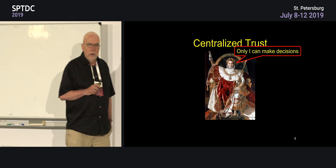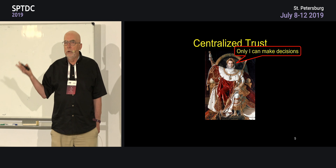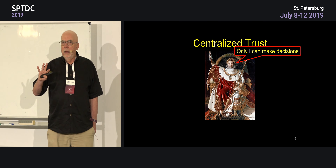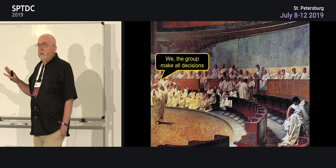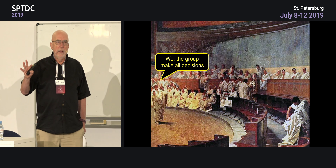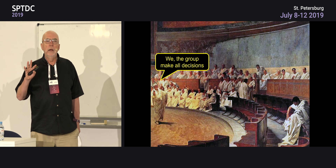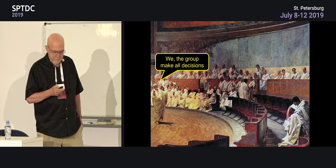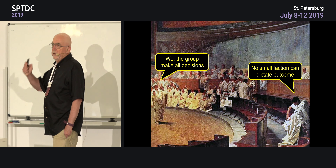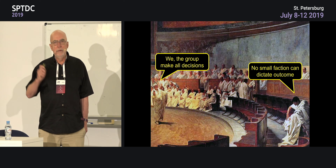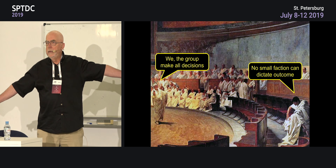In a centralized trust system, there is one party who makes at least one important decision. The problem is that party might be corrupted or do things you don't like. In decentralized systems, a group makes the decisions. If I want to decide what to have for lunch, I'll ask everyone to vote. I'm pretty confident it would be expensive to bribe 51% of you. There's no small faction that can determine the outcome — if there's a small group that can, it's cheaper to bribe, corrupt, or threaten them.